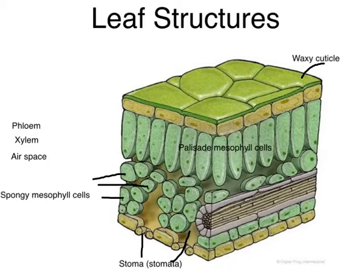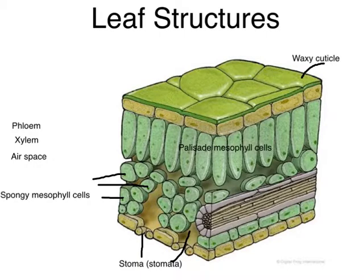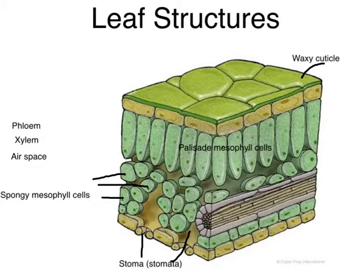There are a couple of other things I want you to label. These guys on either side of the opening are called the guard cells, and they can open or close depending on what the cell needs to do. On a hot day, they may close so that the plant doesn't lose too much water, but when the plant wants to open them to let more carbon dioxide in, it can do that too.